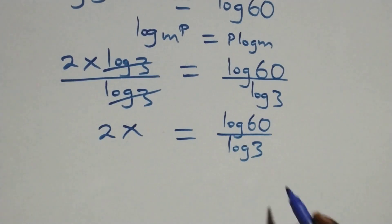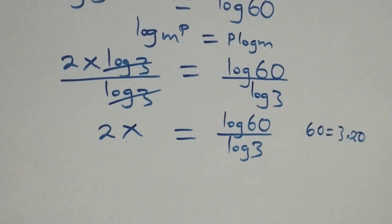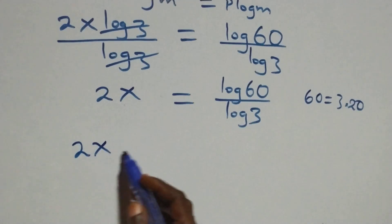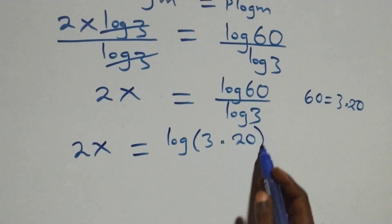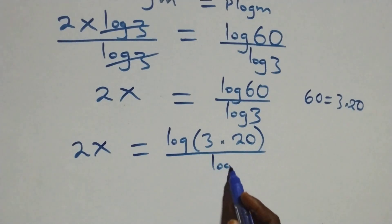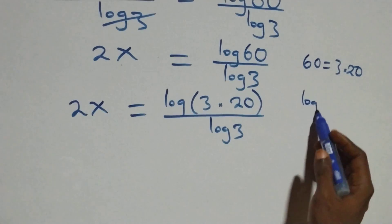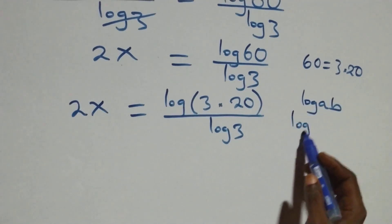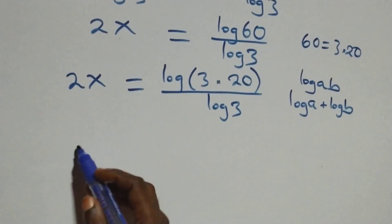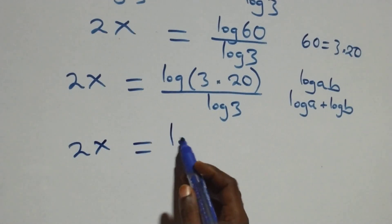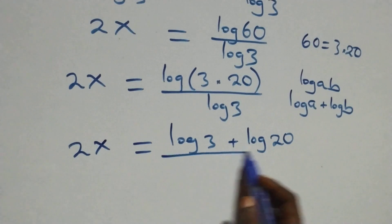The next step: we can express sixty as three times twenty, which gives two x equals log of three times twenty, divided by log three. This follows from the law of logarithms: log of a times b is the same as log a plus log b. So this becomes two x equals log three plus log twenty, all over log three.